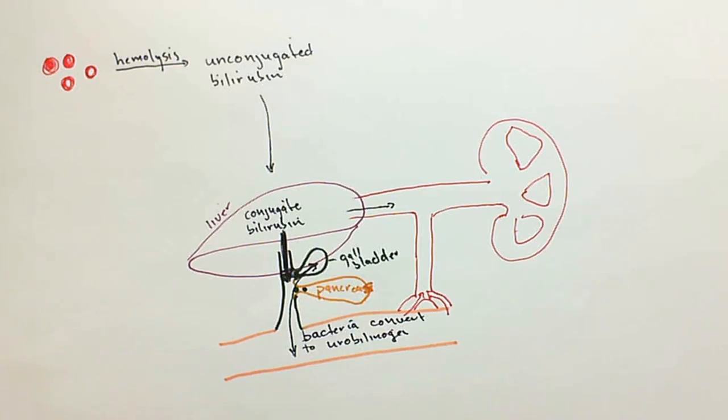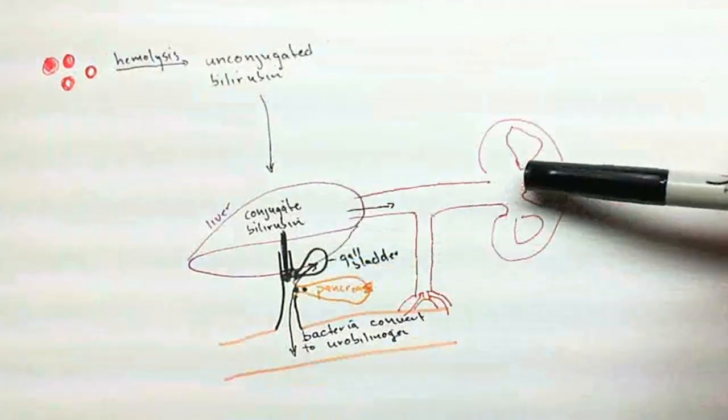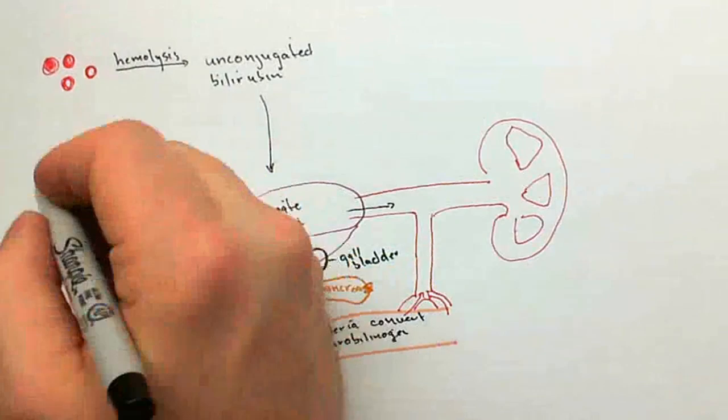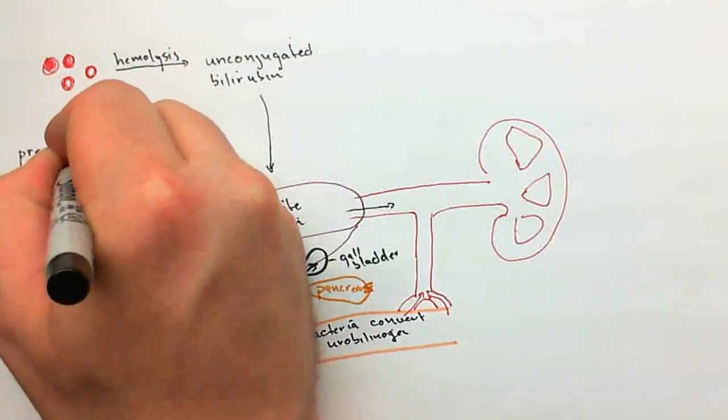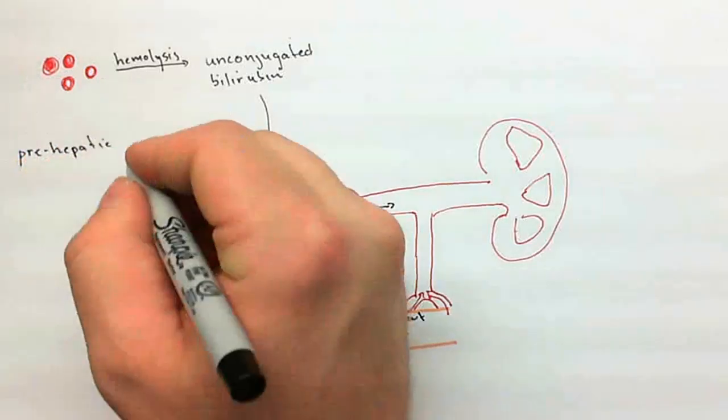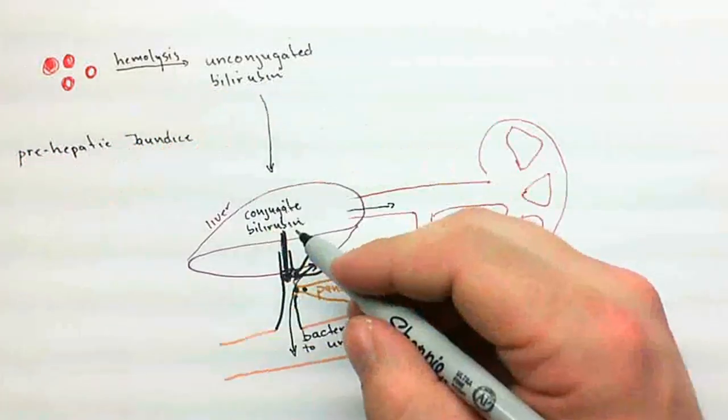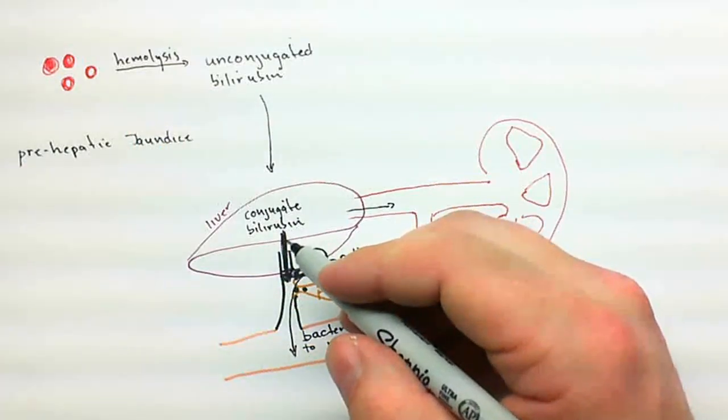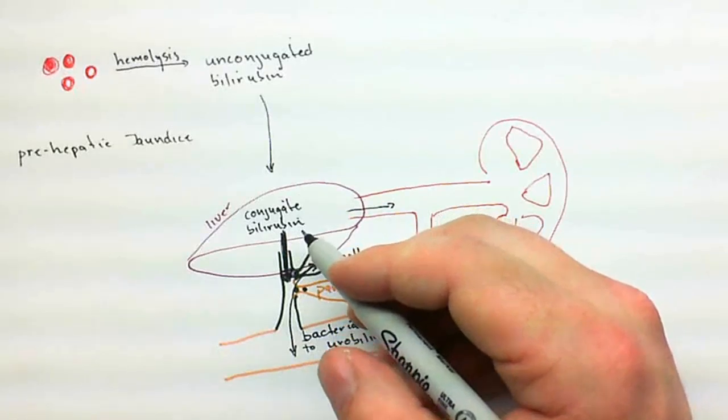When you look at this, there's actually three places where things can go wrong and affect your bilirubin concentration and your urobilinogen concentration in the kidney. The first one I'm going to do is called a pre-hepatic jaundice. Jaundice is anytime there's excess bilirubin in the body, it turns the skin and the eyes. It can actually ooze out of the skin and cause sheets to turn yellow.